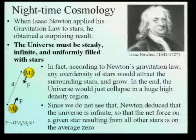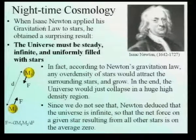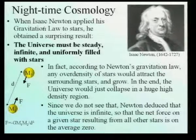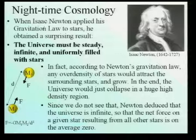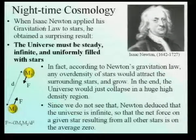This problem goes back to Isaac Newton when he tried to apply his gravitation law to stars, and he obtained a surprising result. He said if stars are distributed and they attract each other, then any over-density of stars would attract the surrounding stars, produce attraction, and would grow. In the end, all the universe would collapse in this over-density. We don't see this.